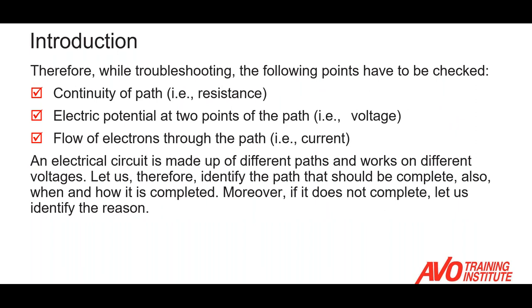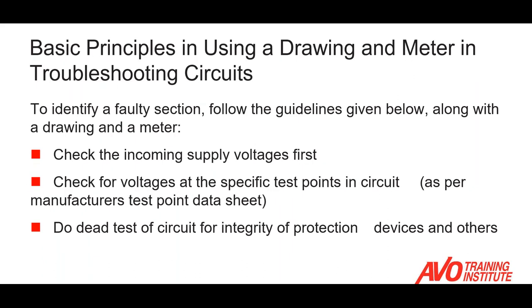For troubleshooting, we have to check the following points: continuity of a path, which is nothing more than a continuous electrical connection; our voltage — do we have a source?; and then the flow of electrons through the path. Electrical circuits are made up of different paths that can work on different voltages, so we need to be able to identify the path and how it's completed. If it's not complete, we need to identify the reason. The first thing we need to look at is: do we have an incoming supply? Is the voltage there? Is it correct? We need to check the voltage at specific test points per the manufacturer's data, and our engineered drawings that are site-specific will be a great help in troubleshooting.